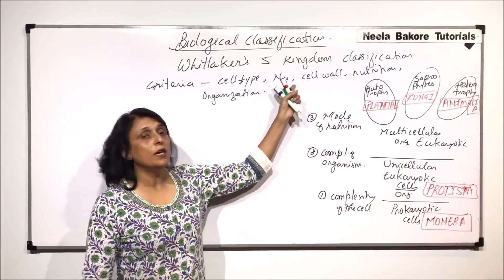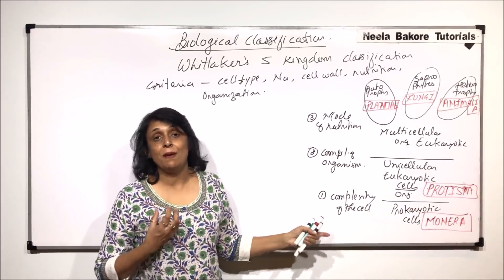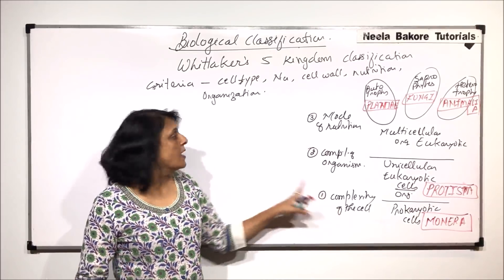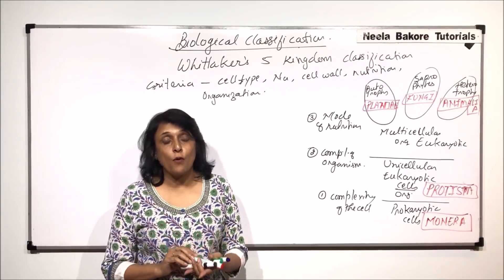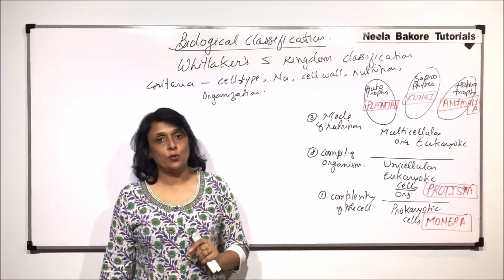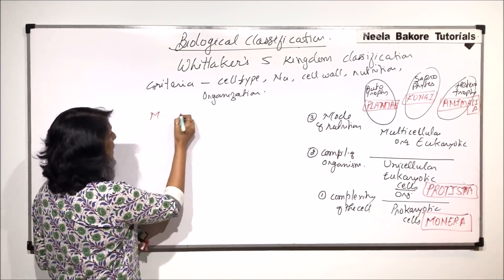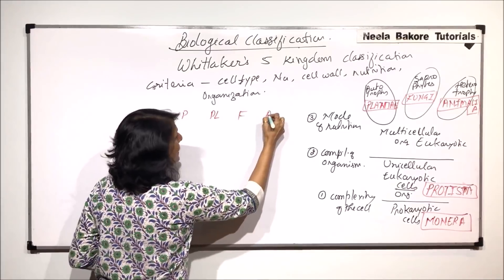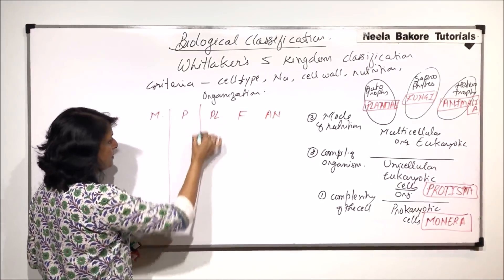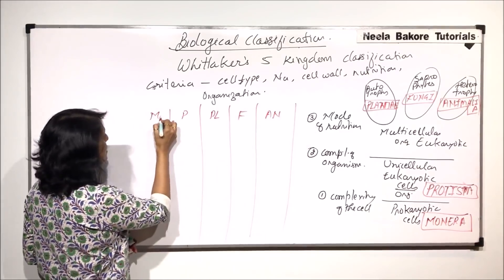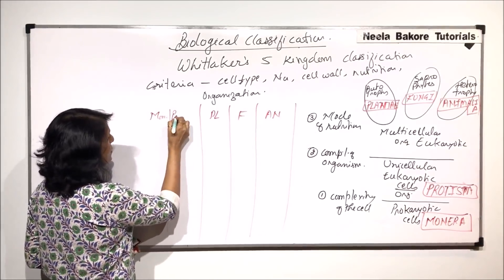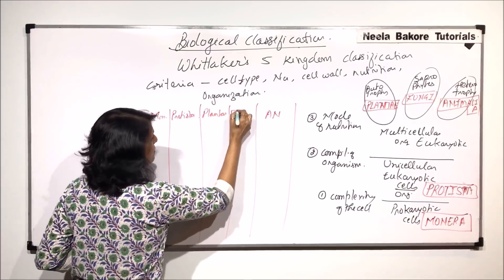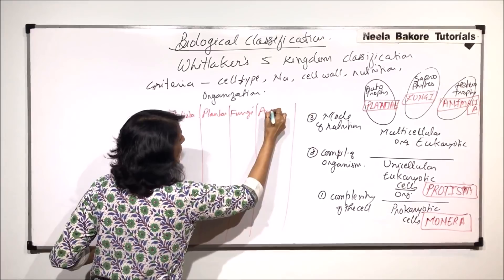All individual characteristics were grouped into three main criteria. When we say complexity of cell, everything is included under this. Now we will talk about the characteristics of all five groups individually — Monera, Protista, Plantae, Fungi, and Animalia. These are the five kingdoms we will compare on the basis of the criteria.